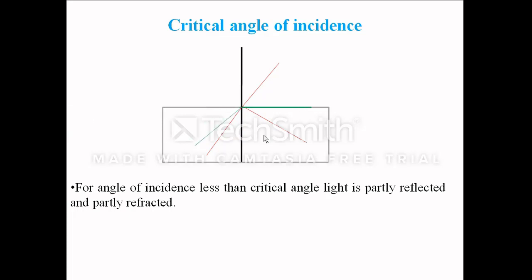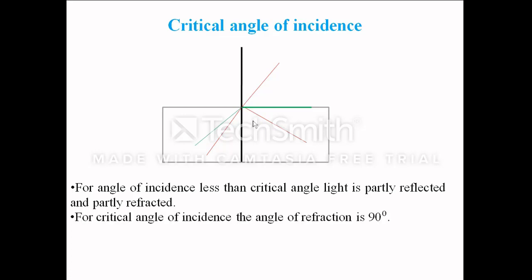Now consider the second case in which the light ray is represented by a green line. When it is incident at a certain angle, after refraction, we observe that the refracted ray is traveling parallel to the interface separating the two mediums. Technically, the angle of refraction in this case is 90 degrees. Therefore, this angle at which the angle of refraction is 90 degrees is known as the critical angle.